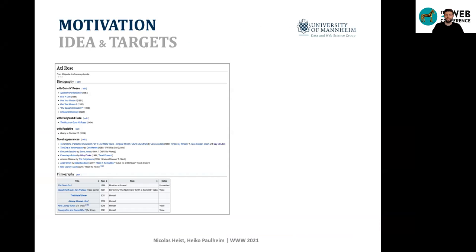Let me show you what kind of constructs we're focusing on with our extraction. On this Wikipedia page of Axl Rose, you can see several constructs where entities co-occur that have something in common — they are similar in a certain way. Concretely, we have enumerations and tables, but in theory we're not only focusing on those two kinds of co-occurring structures but on any kinds of structures where entities can co-occur.